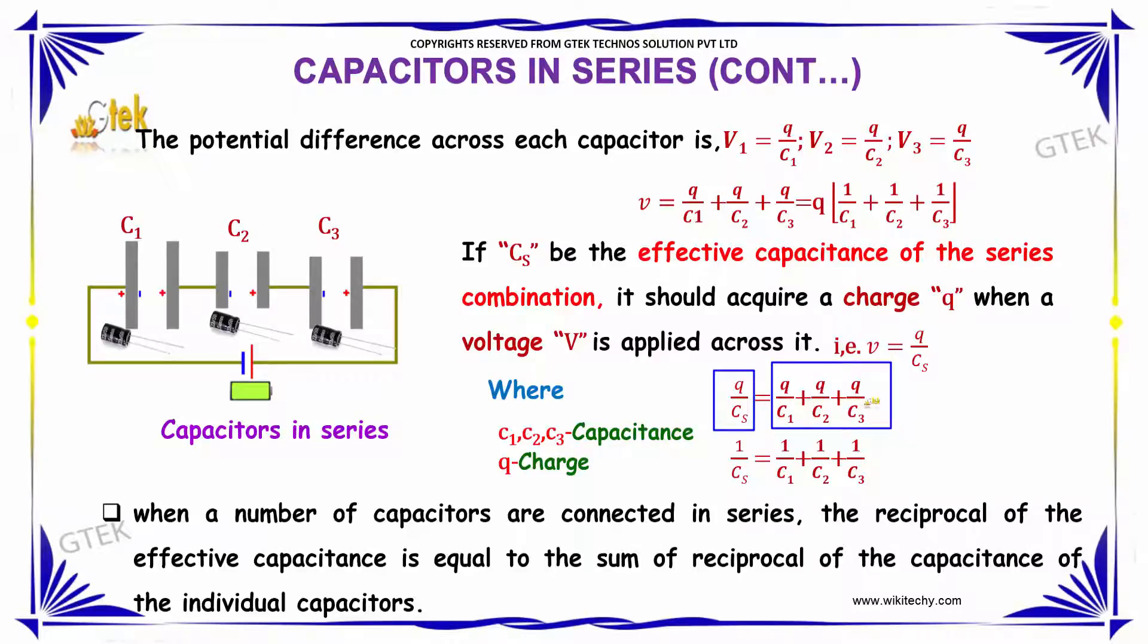we can rewrite this as 1/Cs = 1/C1 + 1/C2 + 1/C3. When capacitors are connected in series, the reciprocal of the effective capacitance equals the sum of the reciprocals of the individual capacitances.